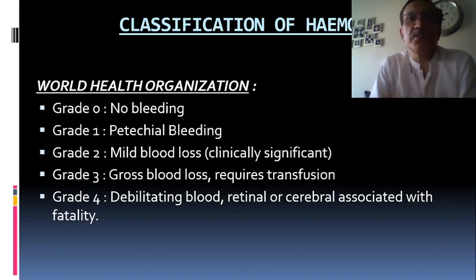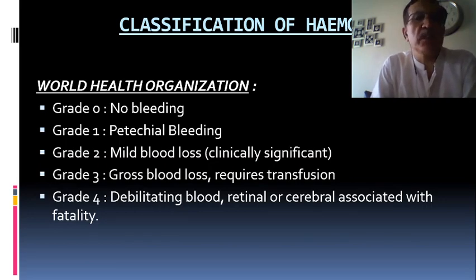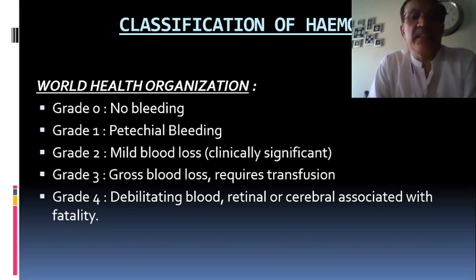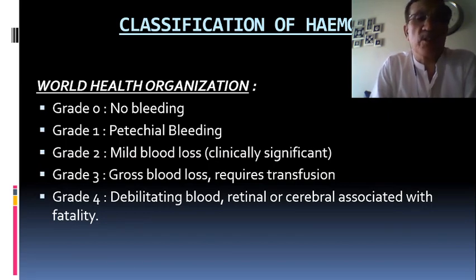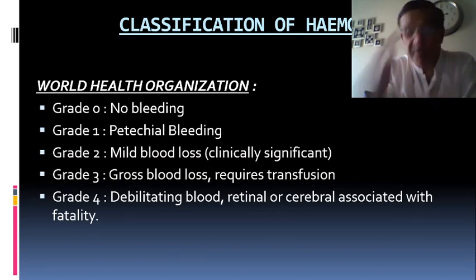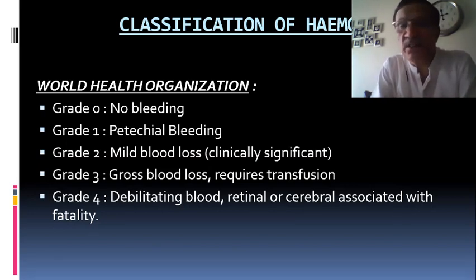The classification of hemorrhage according to WHO: Grade 0 is no bleeding. Grade 1 is petechial hemorrhage. Grade 2 is mild blood loss, clinically significant. Grade 3 is gross blood loss requiring transfusion. Grade 4 is debilitating blood loss — retinal or cerebral — associated with fatality.